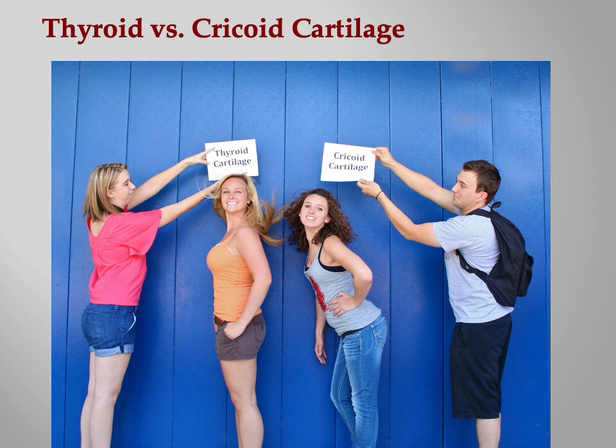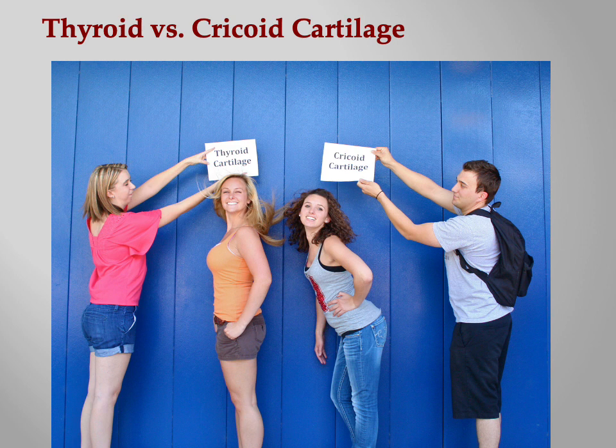These are four of my former students — Emily, McKenna, Stephanie, and Alex — all now RNs, and they all sat in the front row of my class. When I first talked about how the thyroid cartilage is big in front and small in back, and the cricoid is small in front and big in back, McKenna made an analogy comparing herself and Stephanie to those two cartilages.